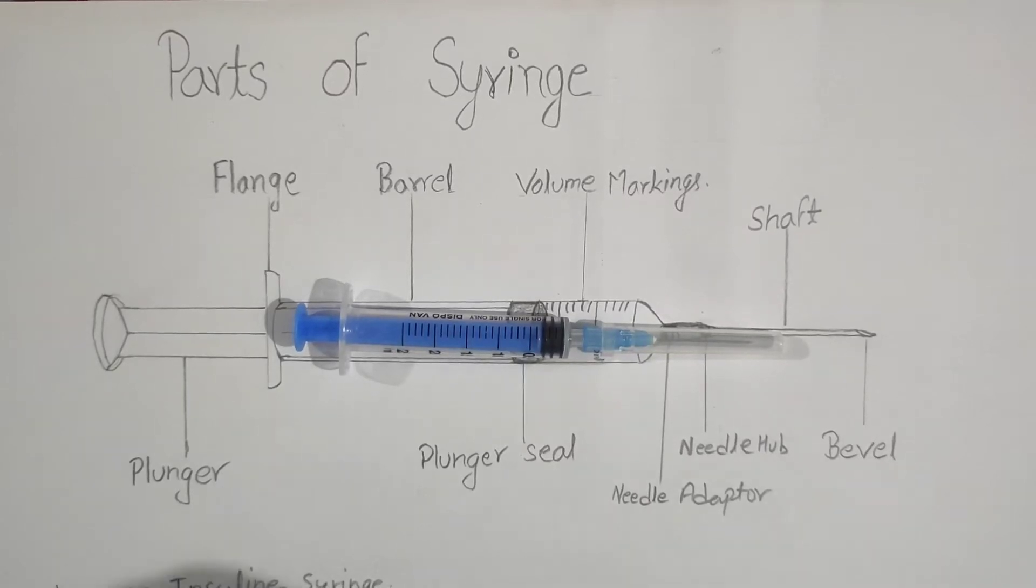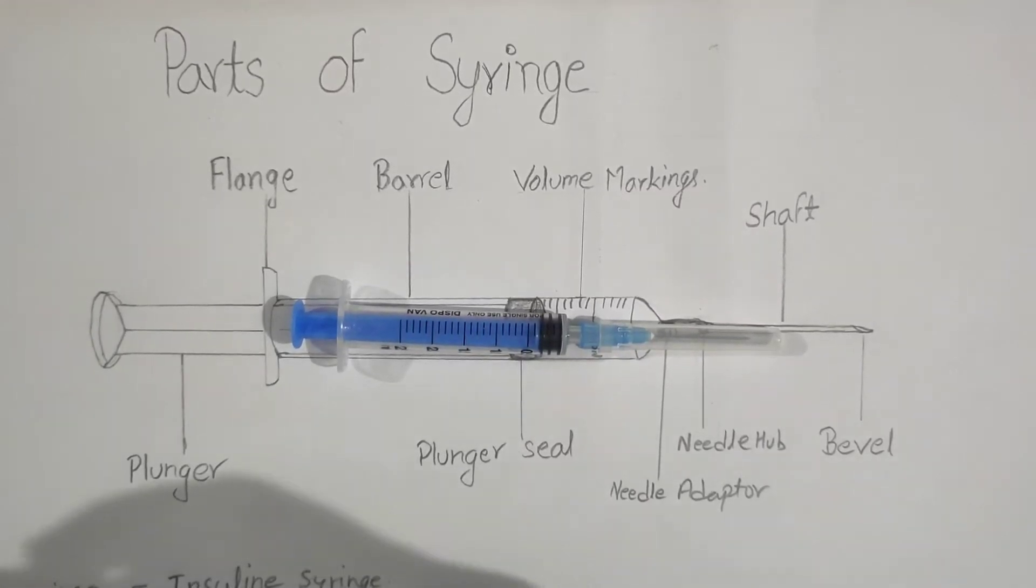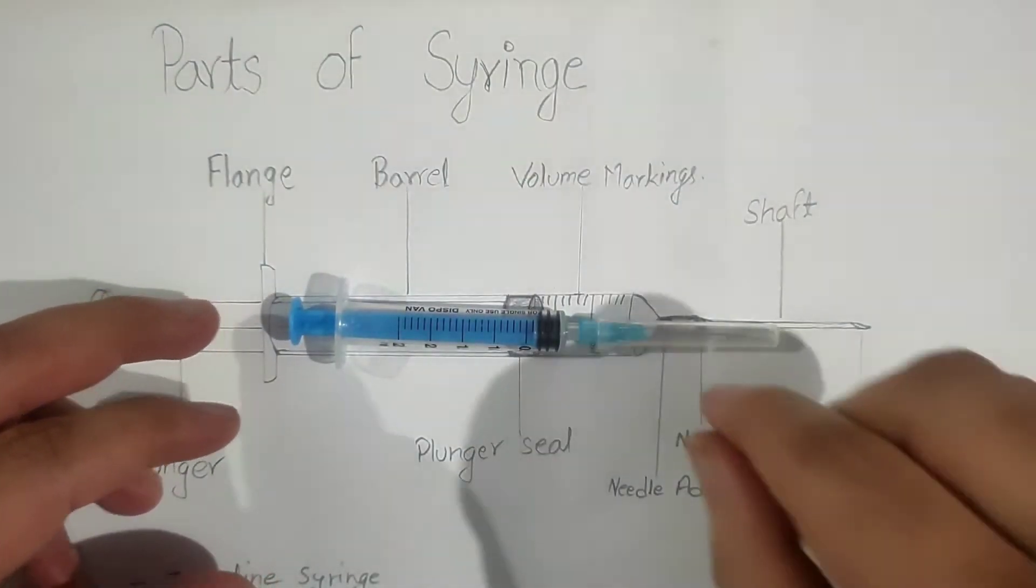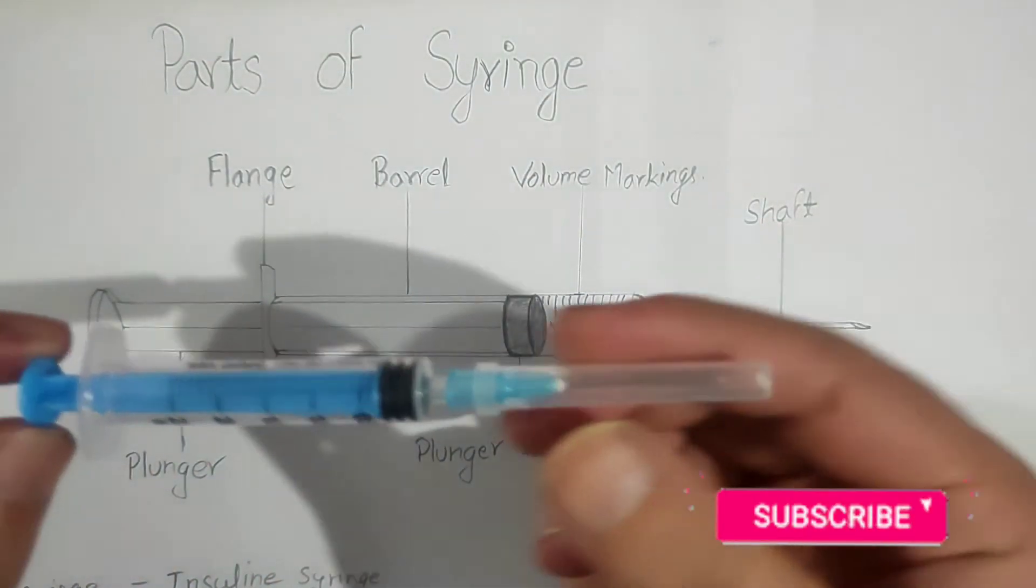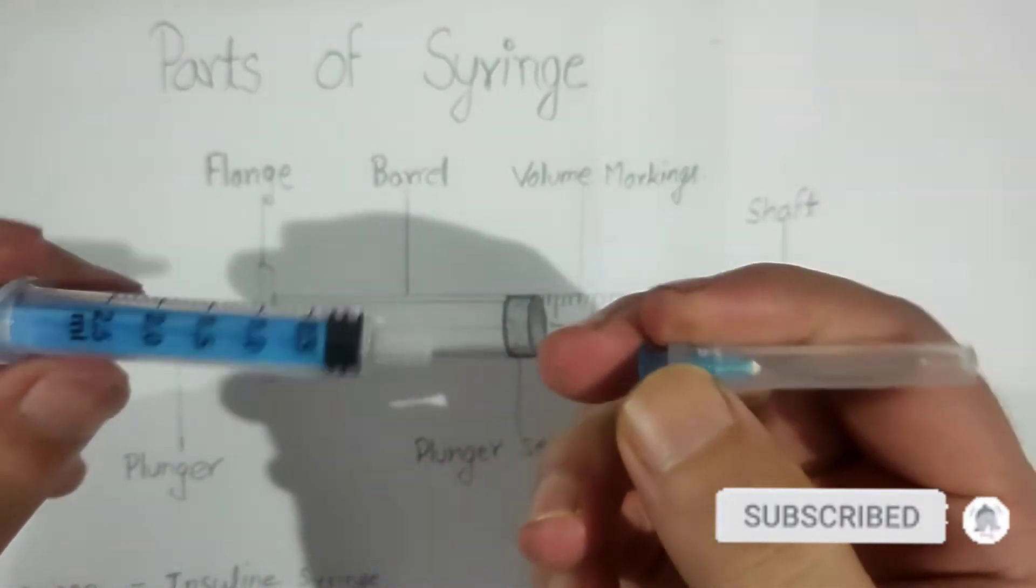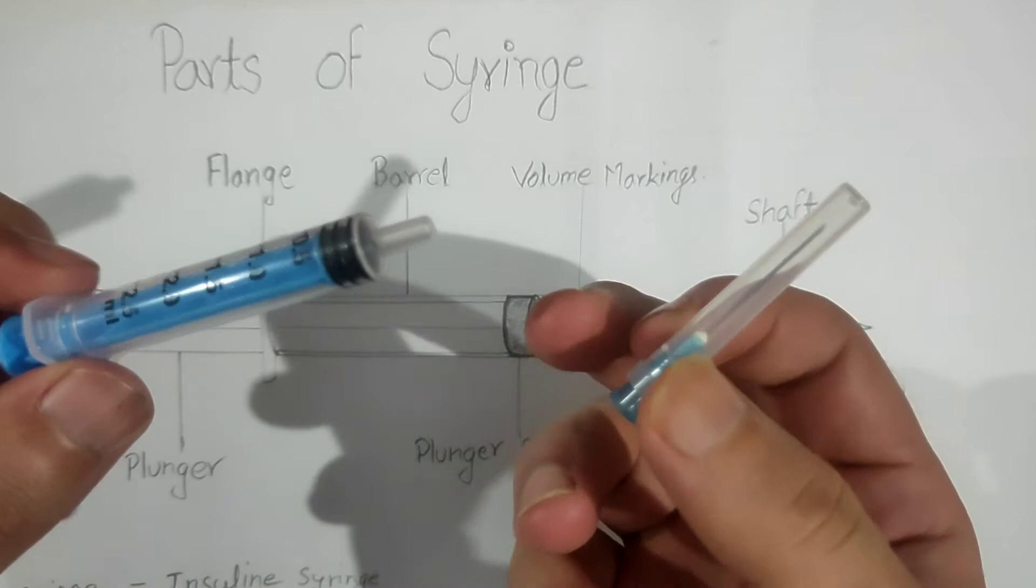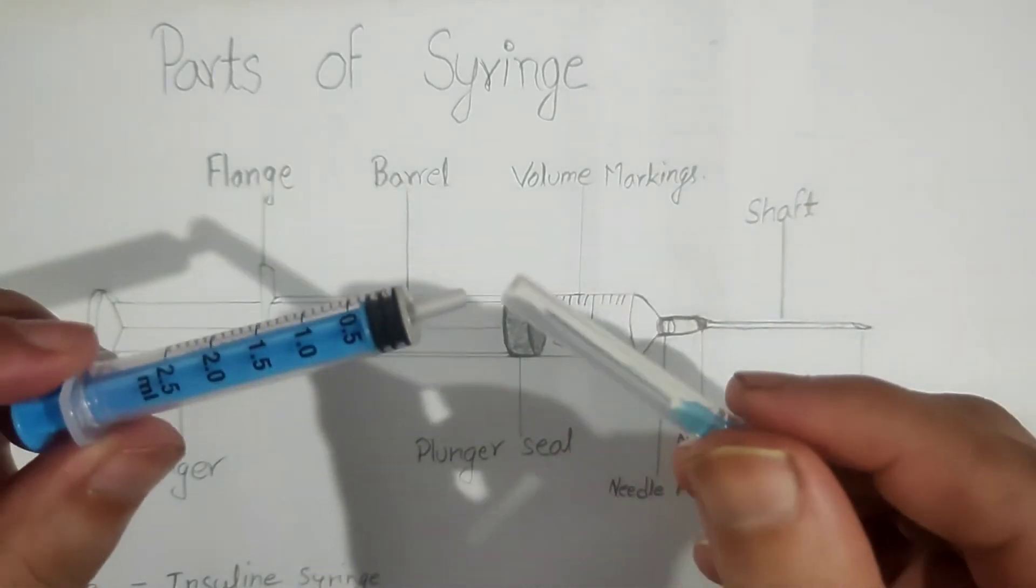Hello friends, welcome back. Today I'm going to talk about the parts of syringes. Syringes have two parts: the needle part and the plastic part called the barrel, and we are going to learn about all the parts of syringes.